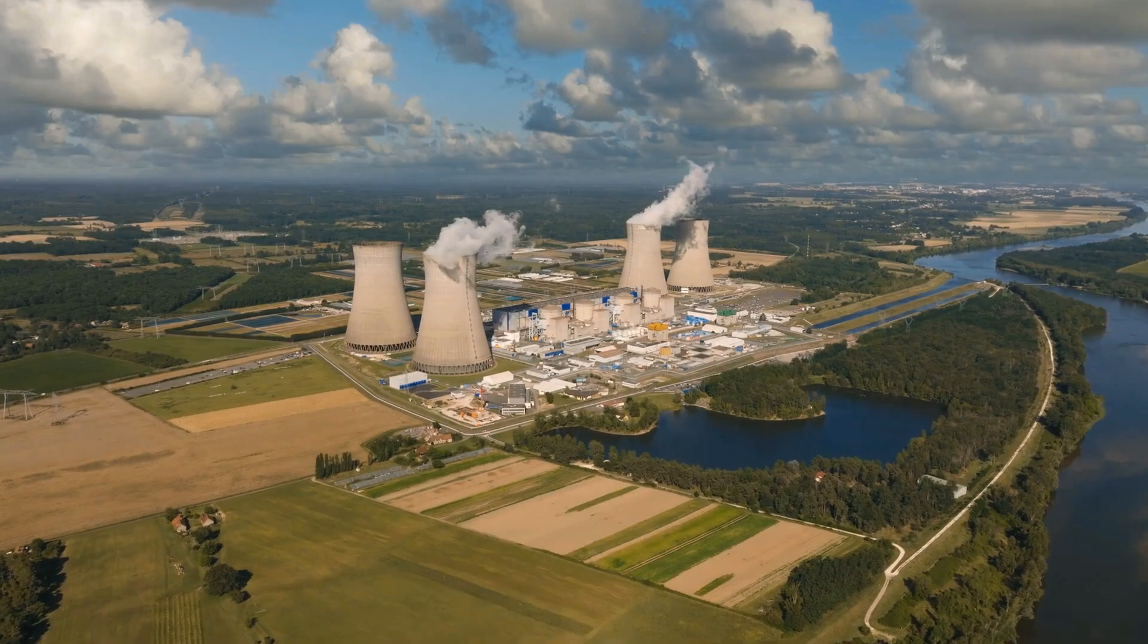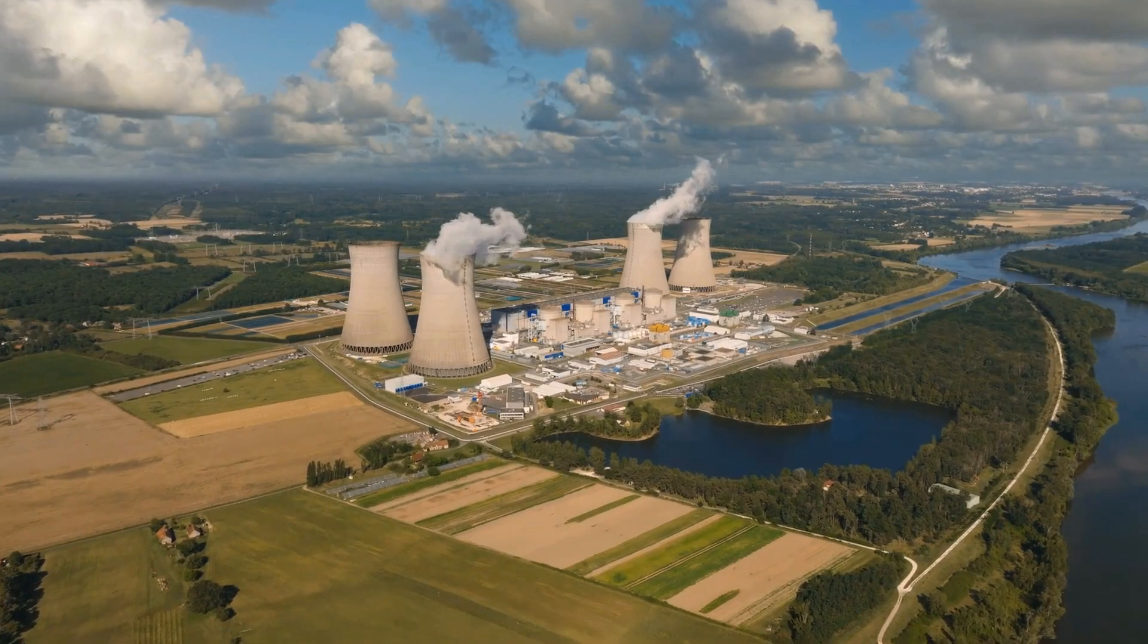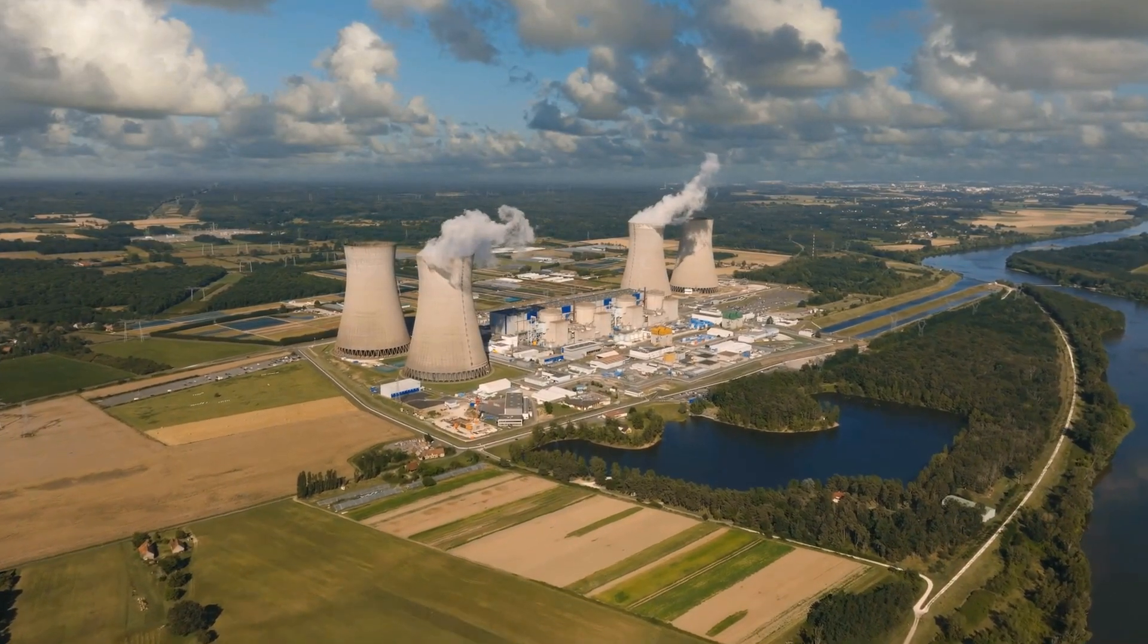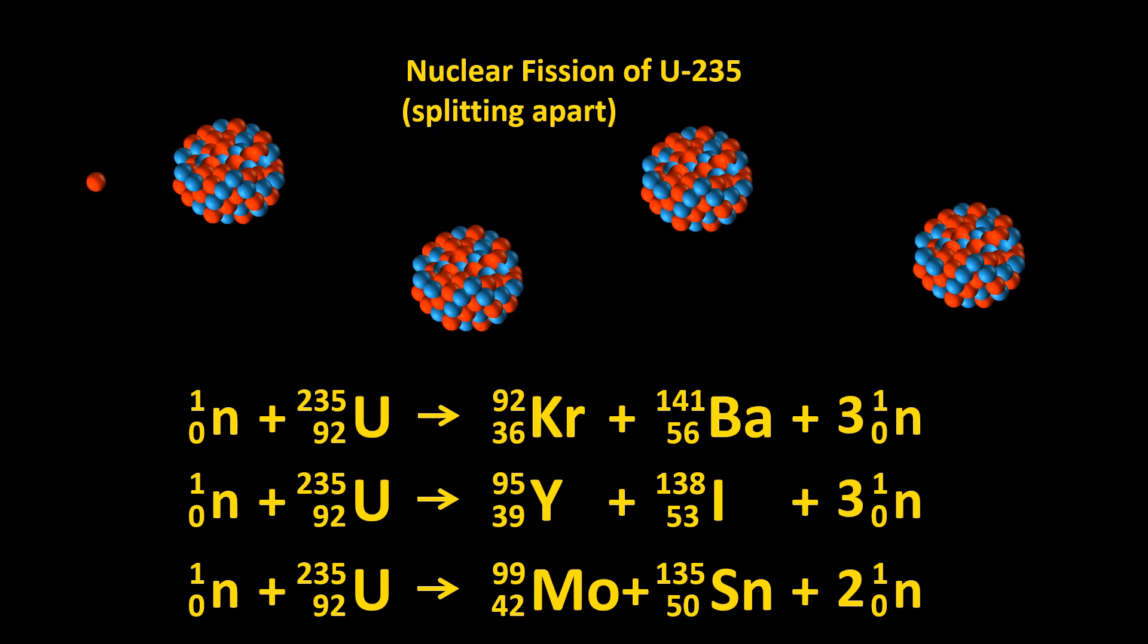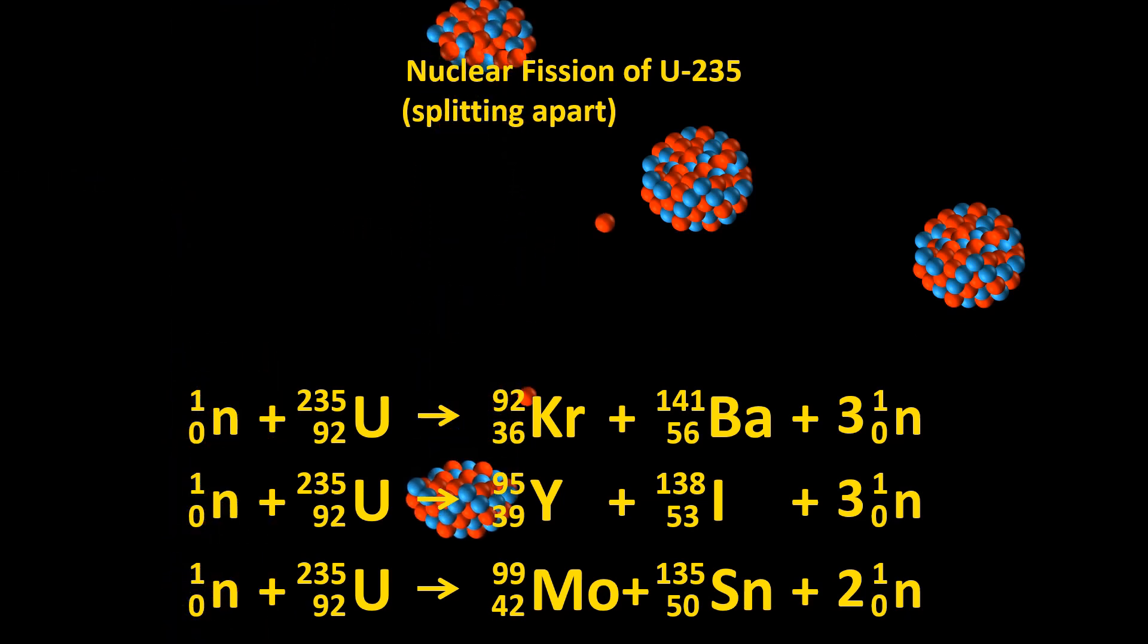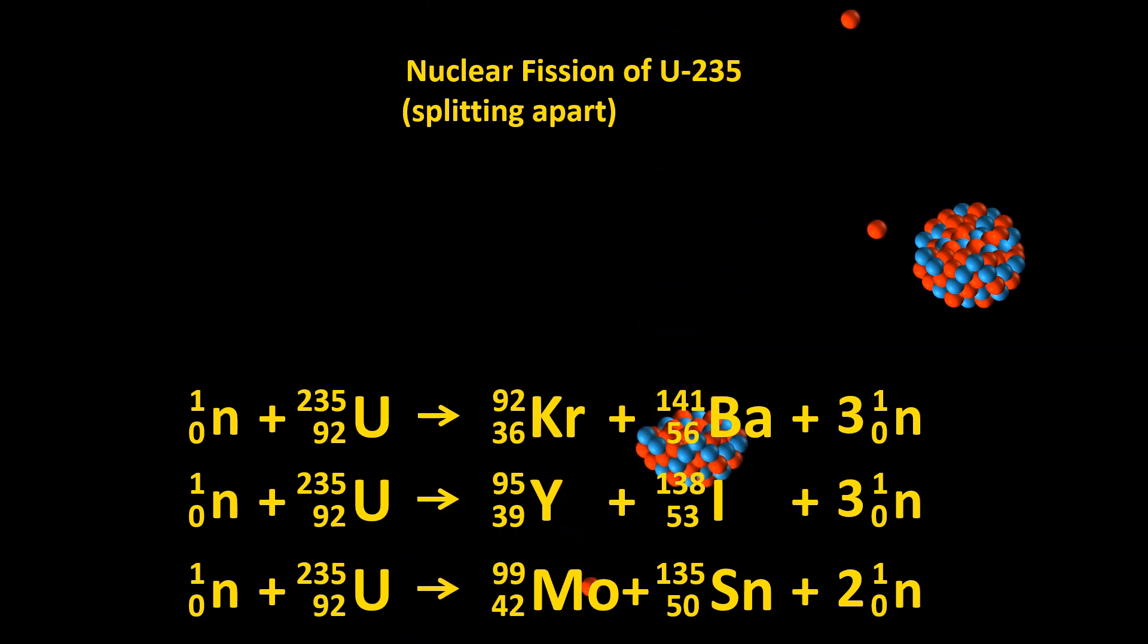The fission process releases a huge amount of heat, and this heat is used to generate the steam that turns the turbines. Here are a few examples of nuclear equations for the fission reactions. A very wide variety of fission fragments is produced.